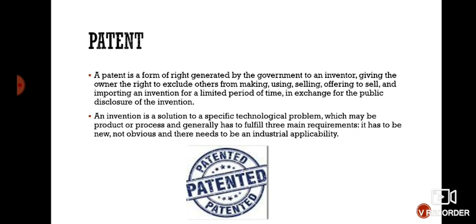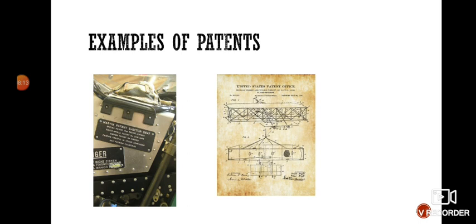An invention is a solution to a specific technological problem — it may be a product or a process — and generally has to fulfill three main requirements: it has to be new, not obvious, and there needs to be industrial applicability. For example, there is a patent for the making of one type of medicine. Anyone other than that person who decides to make that medicine could be stopped from making it. Famous examples of patents include the Martin Patent Ejector Seat and the Wright Brothers' Plane Design.